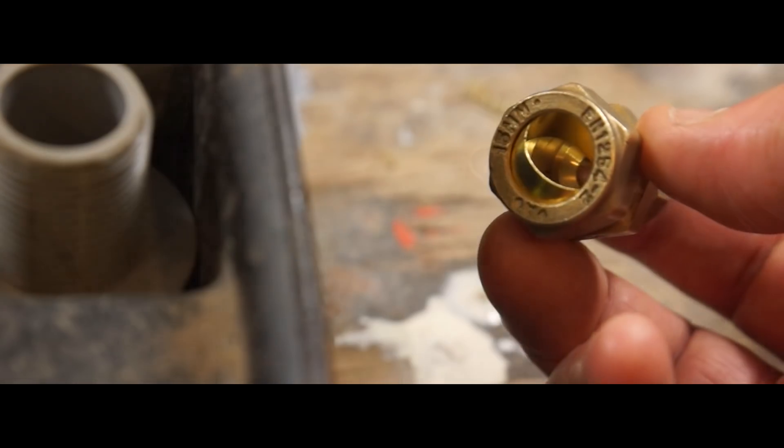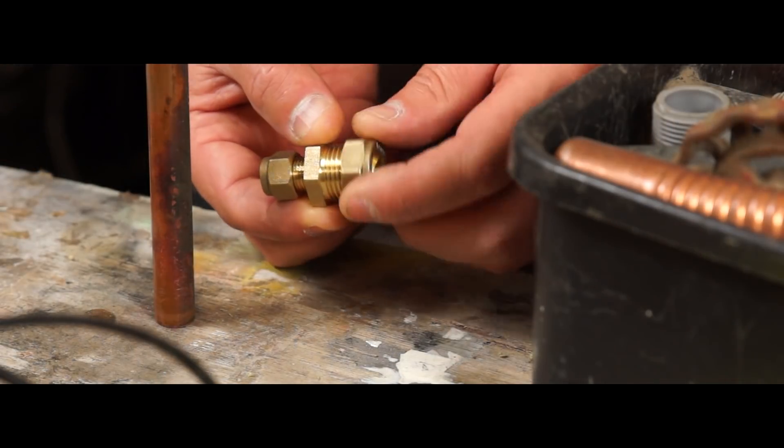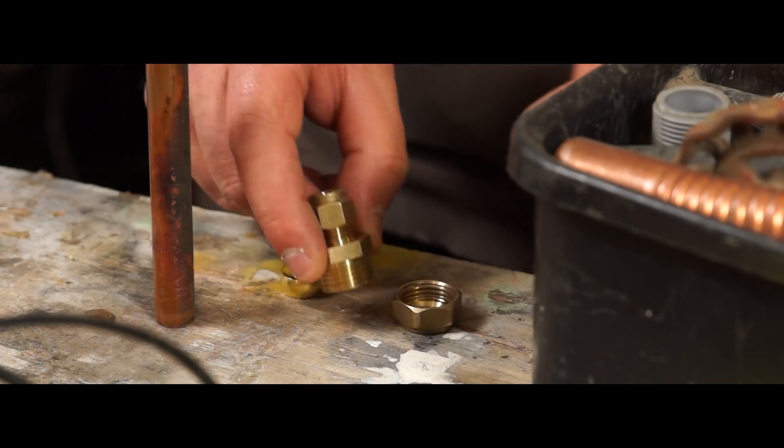And for the nozzle I'm using this compression reducer. These are normally tightened up and loosened with spanners but I want to be able to do this by hand as I'm working, so I'm going to take out this metal compression ring and replace that with a rubber o-ring.